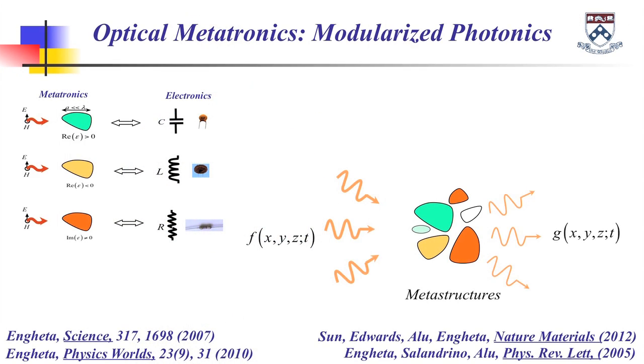One of the interesting applications of metamaterial is in the area that we call optical metatronics. What is optical metatronics? It's a new circuit paradigm in which tiny nanostructures, when properly selected with the proper material, size, and shape, can function as optical lump circuit elements.